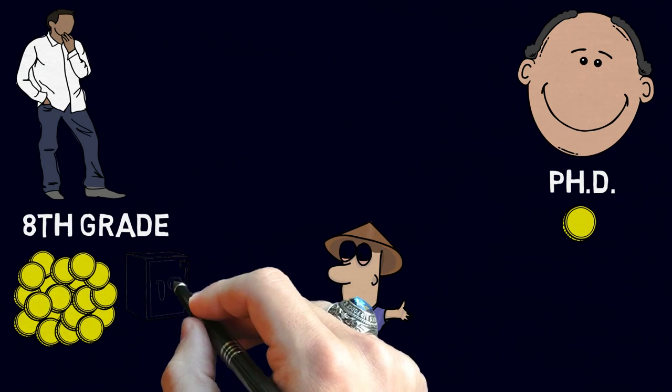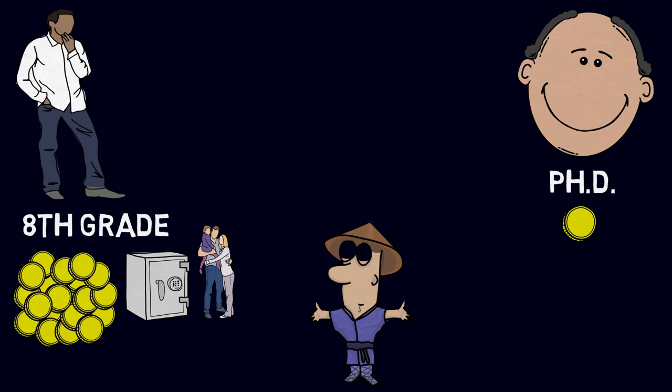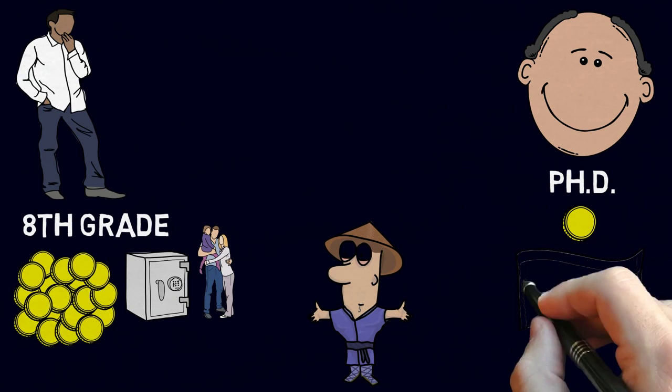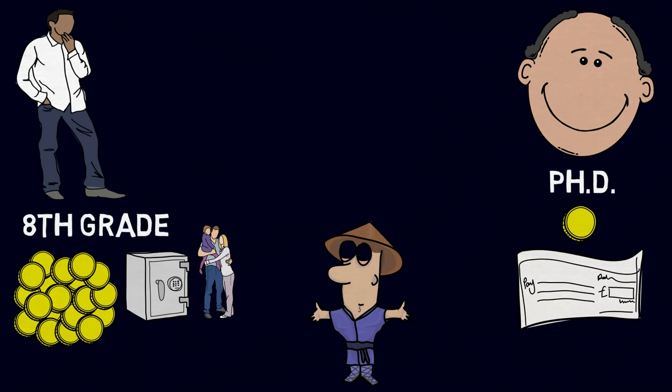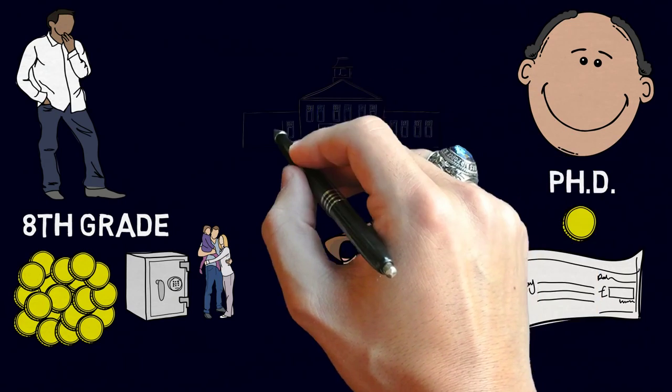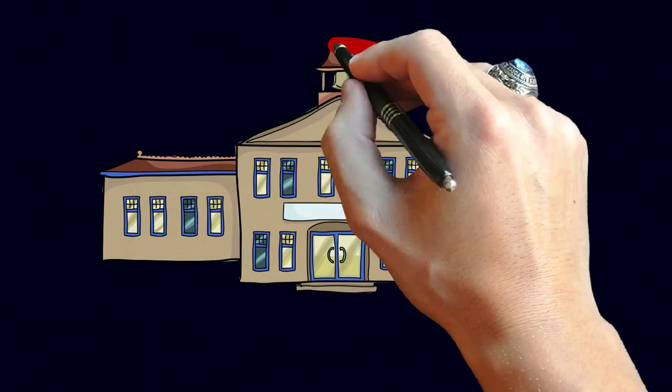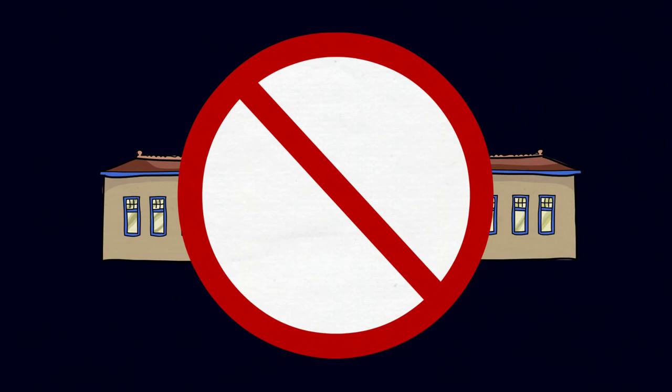One is going to die leaving tens of millions of dollars to his family, the other is going to leave bills to be paid. The problem with financial education is that it isn't taught in schools, so the family decides to teach it.